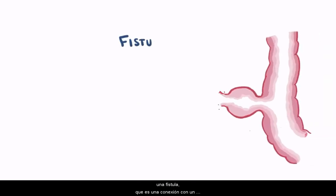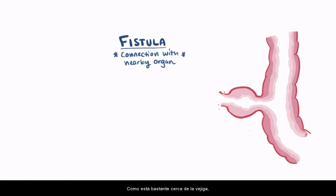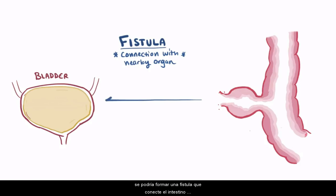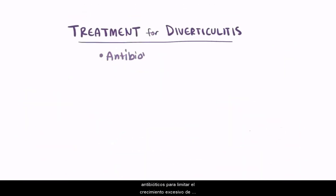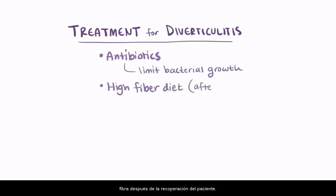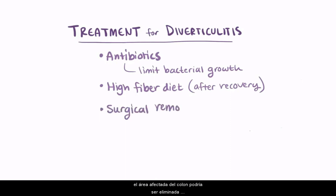Sometimes, if the diverticula become distended enough, it might rupture and form a fistula, which is a connection with an adjacent organ or structure. Since it sits pretty close to the bladder, a fistula connecting the large intestine to the bladder might form, called a colovesicular fistula, and this might result in air or stool in the urine, which is not a good thing. Treatment for diverticulitis might involve antibiotics to limit bacterial overgrowth, and some might recommend a high fiber diet after patients have recovered. In more severe cases, the affected area of the colon might be surgically removed.